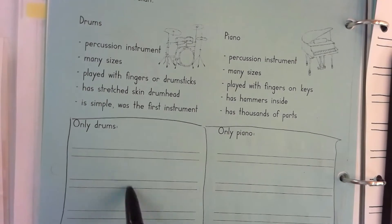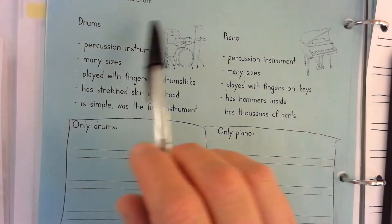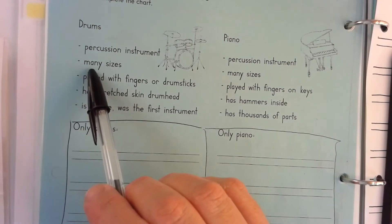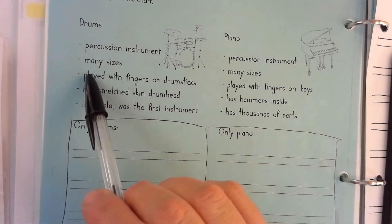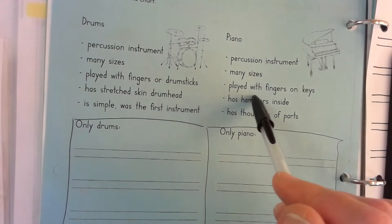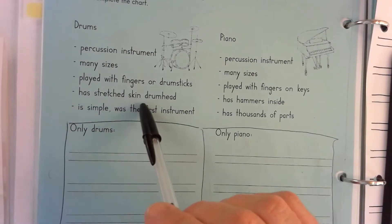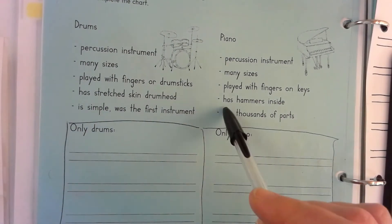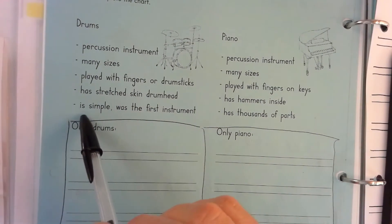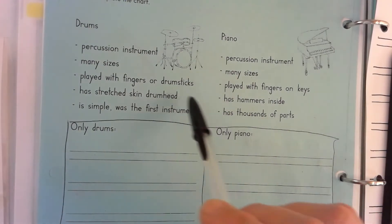Let's go ahead and read this together. First we're going to read it and then we're going to decide which category each of these should go into. Drums is a percussion instrument. A piano is a percussion instrument. The drums are many sizes and a piano is many sizes. Drums are played with fingers or drumsticks. The piano is played with fingers on keys — so that's a little bit different. Has stretched skin drum head; has hammers inside — so that's definitely two things that are different. Is simple; was the first instrument; has thousands of parts.